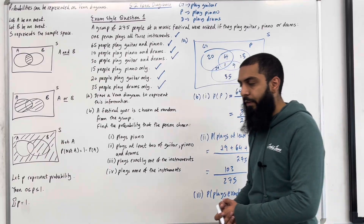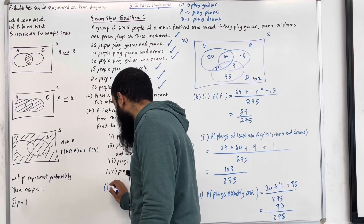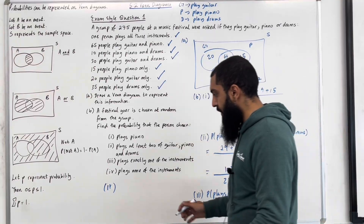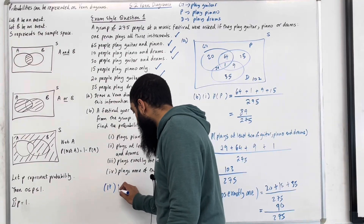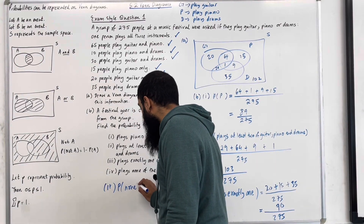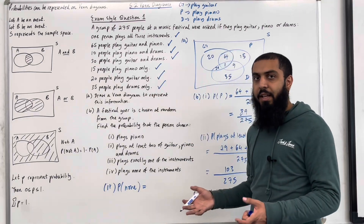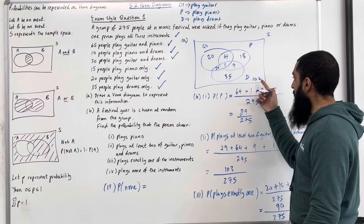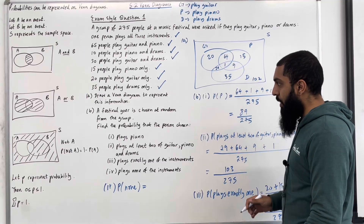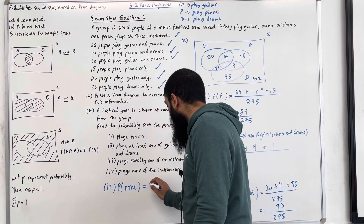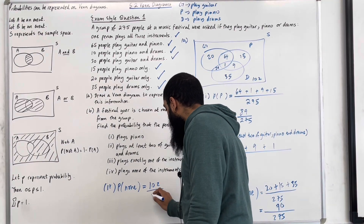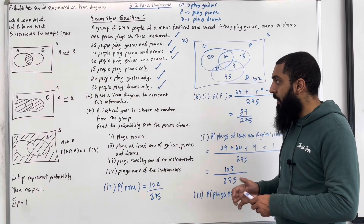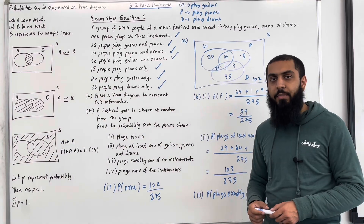Part 4, the final part of exam style question 1: plays none of the instruments. The probability of plays none is technically the outside of all three circles, which is 102. So 102 people play none of the instruments out of 275 — that is the probability. This completes exam style question 1.